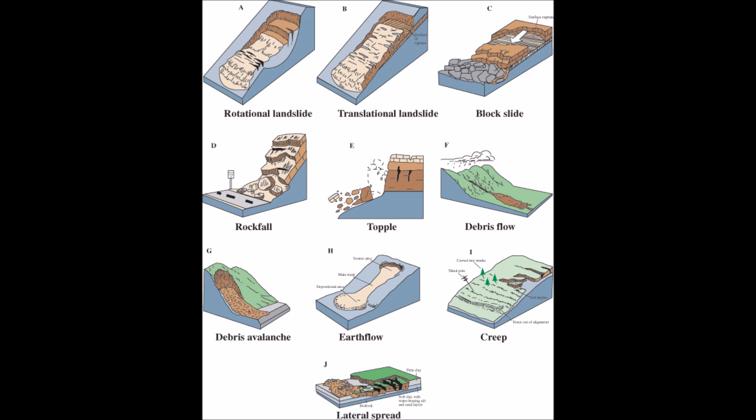There are 10 main types of landslides. Here is a simple diagram highlighting the different processes of mass movement. They are rotational landslides,